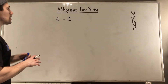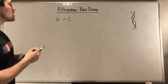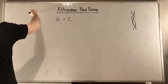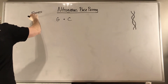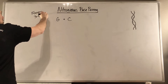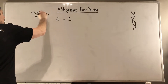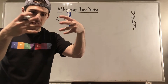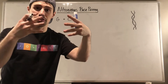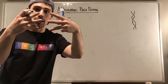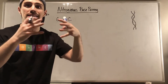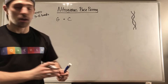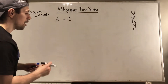So if you look at G and C, let's draw the structures. What you're going to see is that G and C form three hydrogen bonds with each other, which is a strong intermolecular force. They're not bonded to each other, but there are three hydrogen bonds keeping G and C in place and stabilizing the double helix structure.